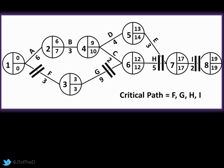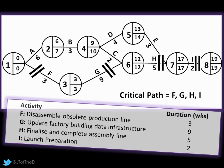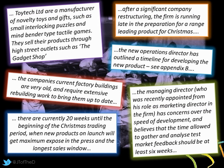Here's the critical path analysis cleaned up. Our critical tasks are F, G, H, and I - those are pretty much all to do with taking apart and rebuilding our factory facilities; all operations tasks. The top line - A, B, C, D, and E - are all very much marketing. The launch is the final thing, which depends on everything else coming together on time. You'll get good application by using the case study as well as what's in the appendices.